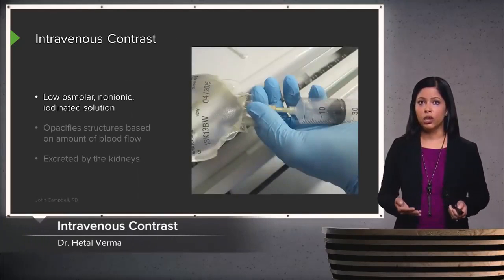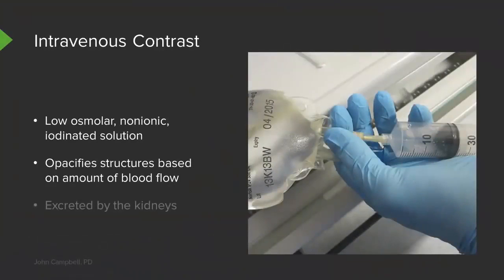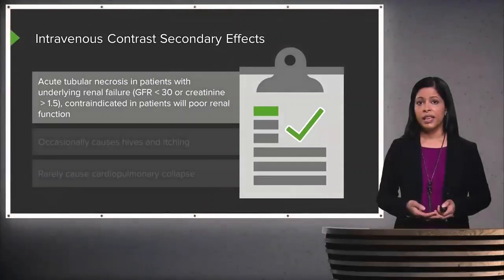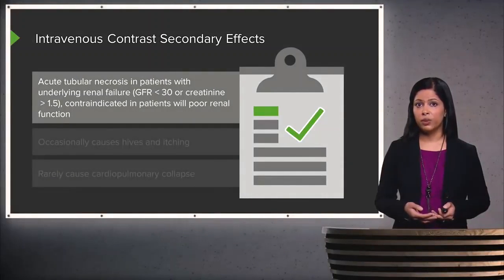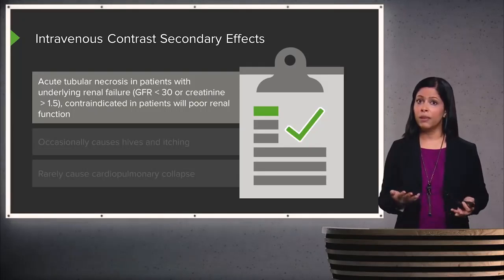Intravenous contrast is a low-osmolar, non-ionic, iodinated solution. It opacifies structures based on the amount of blood flow within that structure, so structures with more blood flow will appear more opacified. It is excreted by the kidneys and can cause acute tubular necrosis in patients with underlying renal failure. If a patient has a GFR of less than 30 or a creatinine greater than about 1.5, intravenous contrast is contraindicated, as the resulting acute tubular necrosis may or may not be reversible.